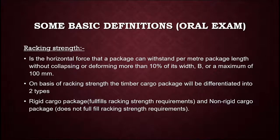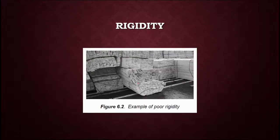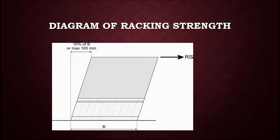Racking strength is the ability of the timber package to withstand horizontal force that acts on a package per meter package length. A package here means a stow of timber cargo that can withstand without collapsing or deforming more than 10 percent of its width. On the basis of racking strength, timber cargo packages are differentiated into two types: rigid cargo package, which fulfills the racking strength requirements, and non-rigid cargo package, which does not. When horizontal force is applied at the top of the stow, it must not deform by 10 percent of its breadth or 100 mm, whichever is greater.